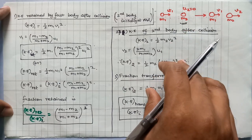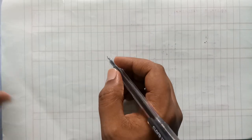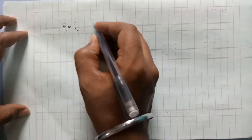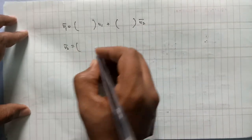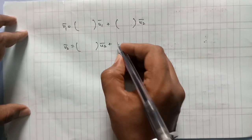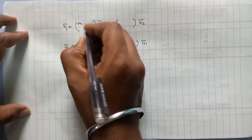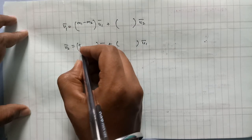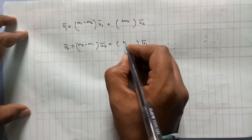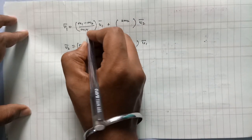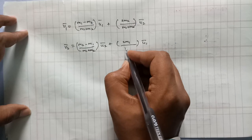Let's start with V1 and V2. V1 is equal to M1 minus M2 by M1 plus M2, multiplied by U1. For V2, this is 2M1 by M1 plus M2, multiplied by U1. The denominator in both formulas is M1 plus M2.